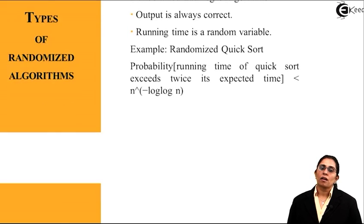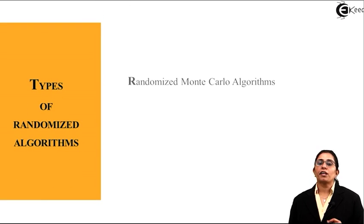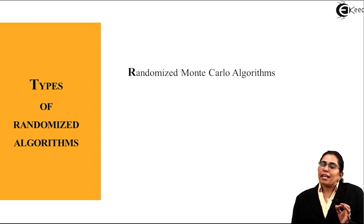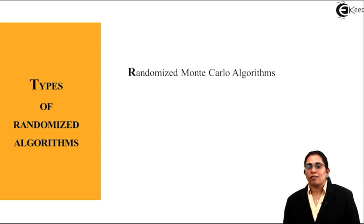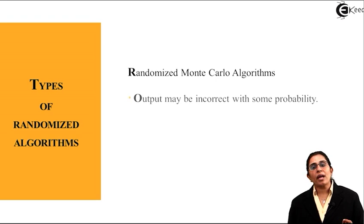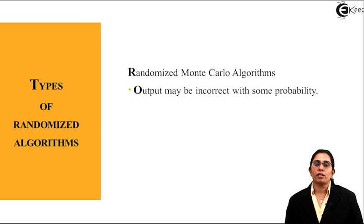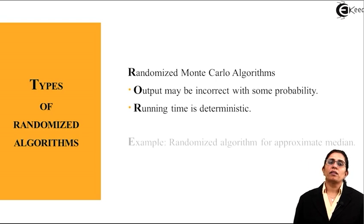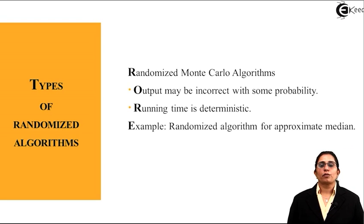And the second one is a randomized Monte Carlo algorithm. It is little less efficient than the Las Vegas as the output may be incorrect with some probability. And the running time is deterministic. The example is the randomized algorithm for approximate median.